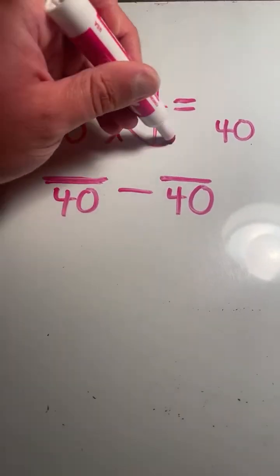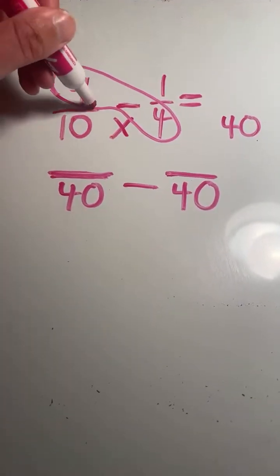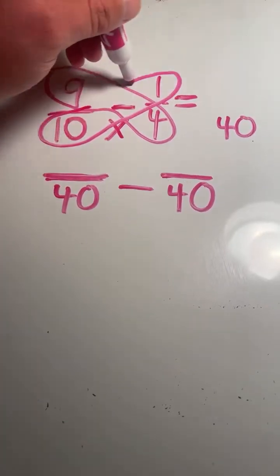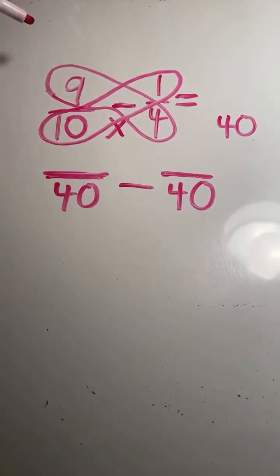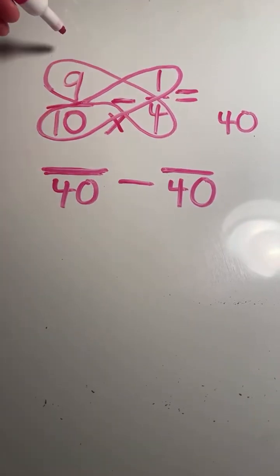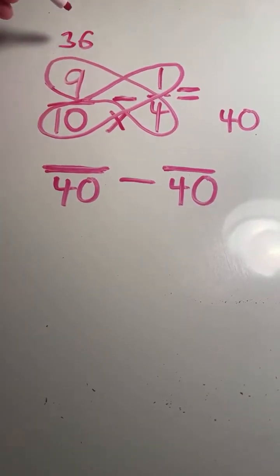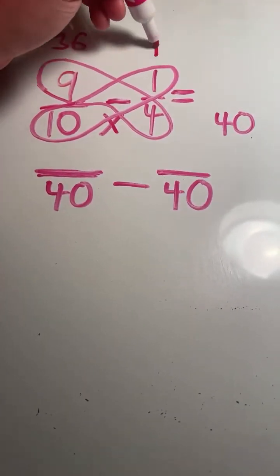Next, we multiply each numerator times the opposite denominator. Nine times 4 equals 36. One times 10 equals 10.